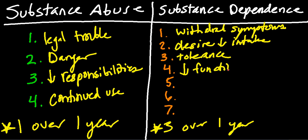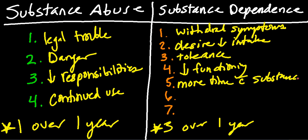Fourth, decreased functioning — for example with alcohol, you're not able to go to work or meet your responsibilities in life, similar to abuse. Fifth, spending more time with the substance: obsessing over getting it, having to drive further to obtain it, spending more time ingesting it, and more time recovering from the acute intoxication and side effects of the substance.